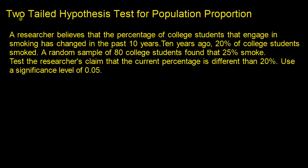In this video, we're going to discuss a two-tail hypothesis test for population proportion. Let's read through the example first. A researcher believes that the percentage of college students that engage in smoking has changed in the past 10 years. 10 years ago, 20% of college students smoked. A random sample of 80 college students found that 25% smoke. Test the researcher's claim that the current percentage is different than 20%, using a significance level of 0.05.